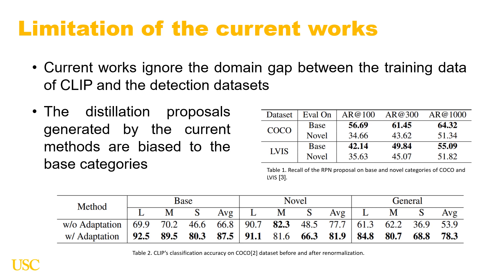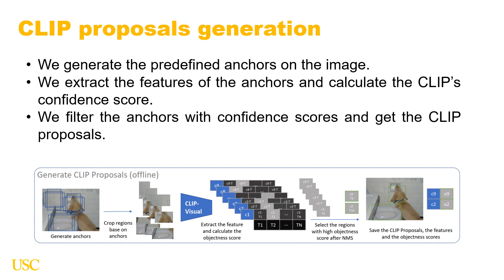Second, the distillation proposals generated by VROD are biased toward base categories. Since VROD uses proposals generated from an RPN trained with base category instances, the distillation proposals will be biased toward regions that contain base category instances. In Table 1, we can see the recall of the RPN on base and novel instances on both COCO and LVIS datasets. The recall for novel categories is far behind the result on LVIS.